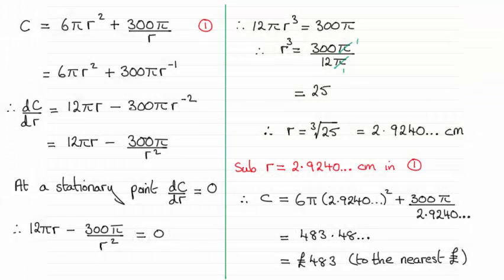Hi there. For this part of the question, we were asked to find the minimum cost of polishing this cylinder. As you can see, it turns out to be £483 to the nearest pound.